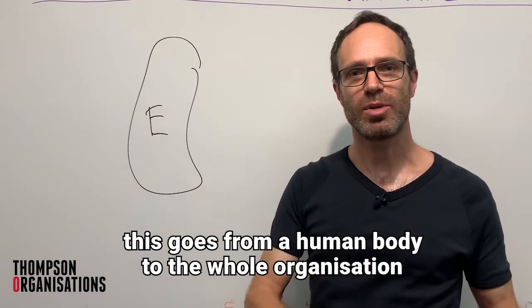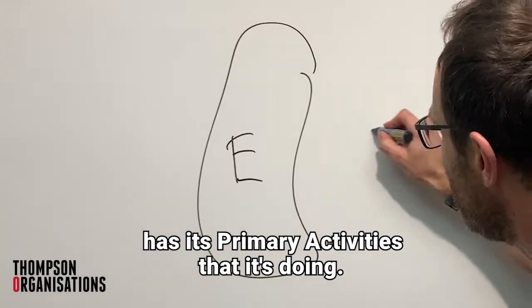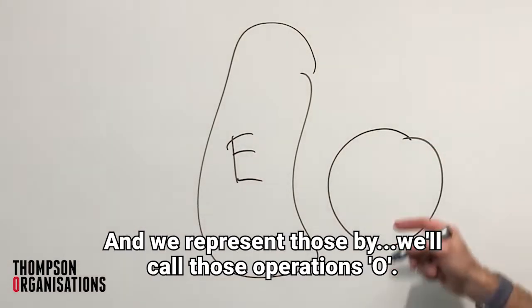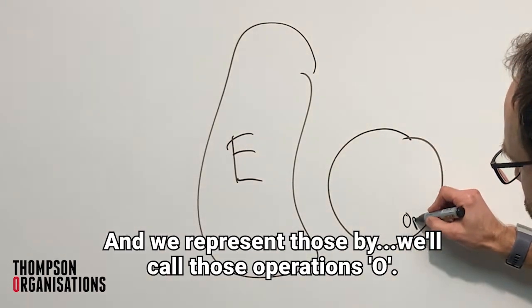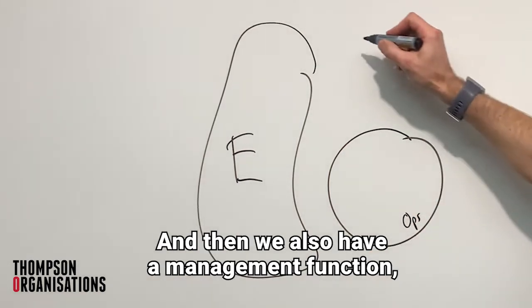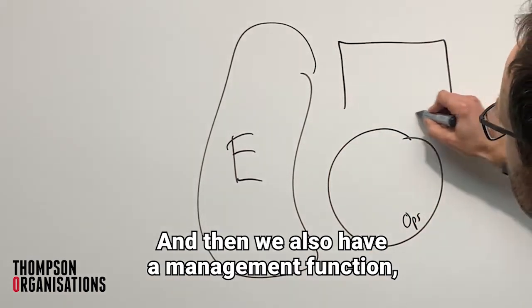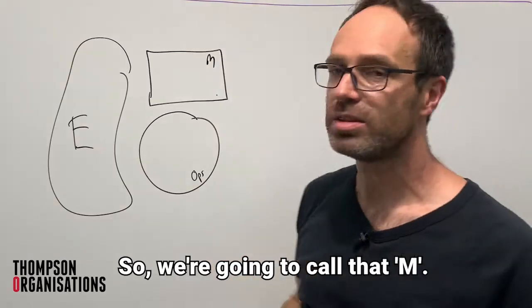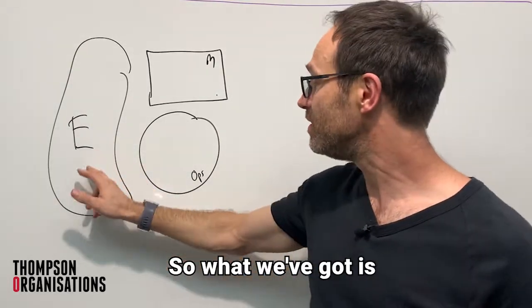So every system, this goes from a human body to the whole organization, has its primary activities that it's doing, and we represent those by operations O. And then we also have a management function, which has various functions that it's going to do. So we're going to call that M. So what we've got is the environment, operations, and management.